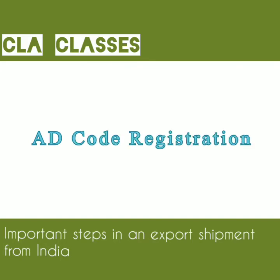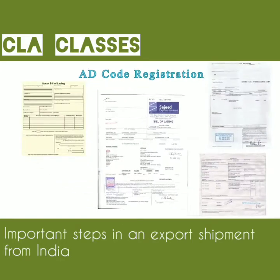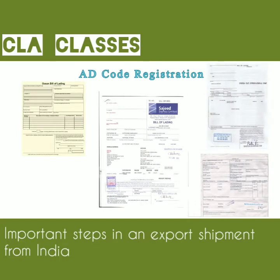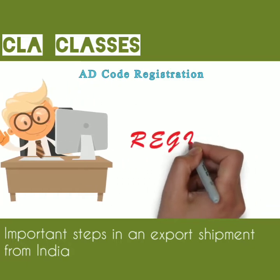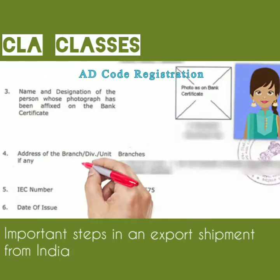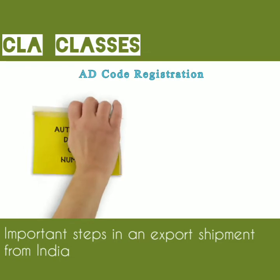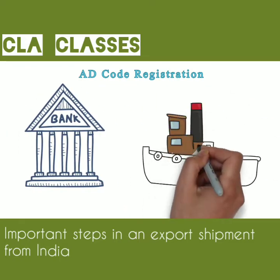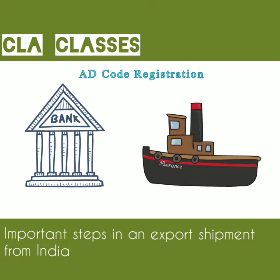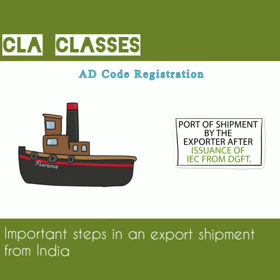A.D. Code Registration: Before filing any export shipping bill, Nikku or the CHAs are required to register with the customs their IEC code and Authorized Dealer code number of the bank through which export proceeds are to be realized. A.D. Code Registration is done at the port of shipment by the exporter after issuance of IEC from DGFT.